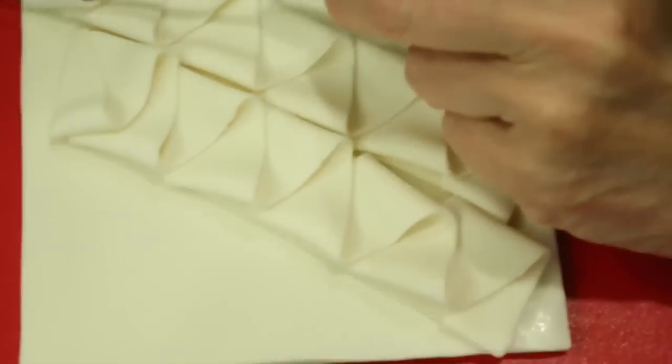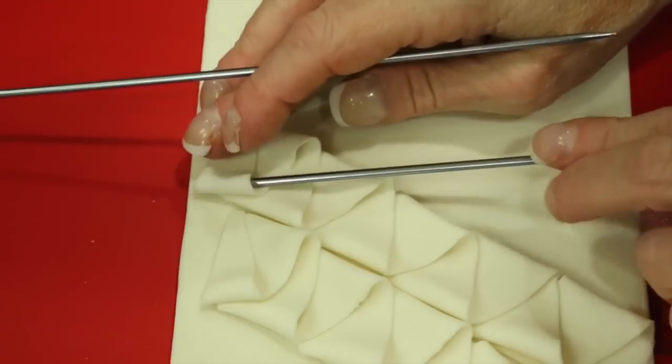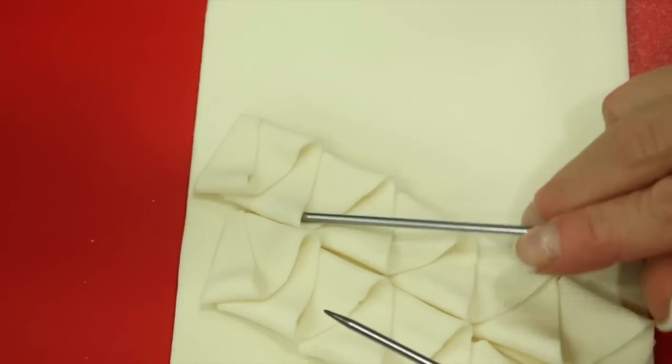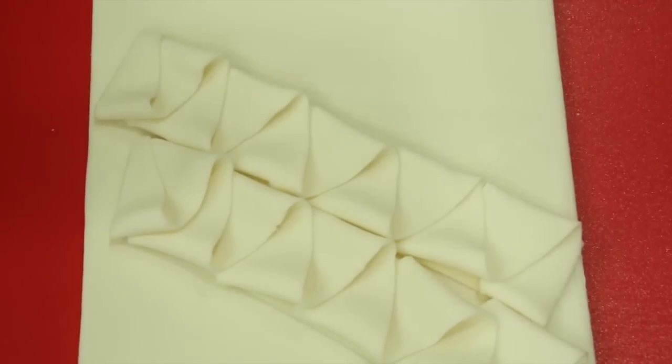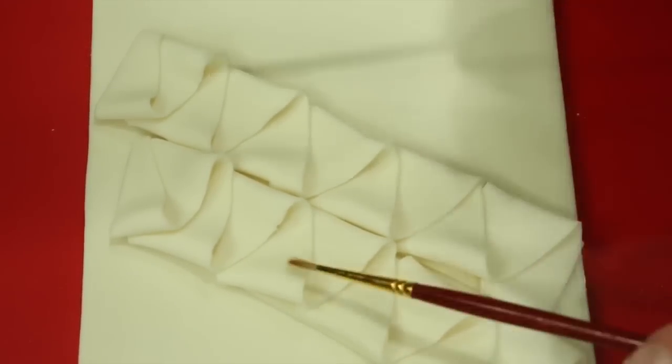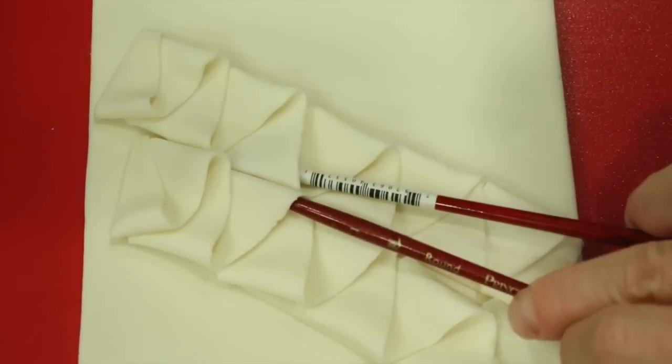Once they're together you can either use your knitting needles to bring the pieces out and touching so that you don't have a seam, or you can use the handle of a small brush and make sure that they touch.